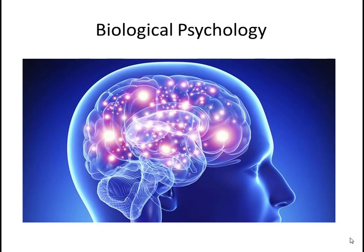Before we get into specific topics like addiction, sleep, hunger, or brain damage, we should go over some basics — some basic overviews of anatomy and of the field of biological psychology. Biological psychology, sometimes called biopsychology, looks at biological functions and how they relate to certain mental processes and behaviors, and how behaviors and mental processes affect the biology. That's everything from genetics to the nervous system to how neurons work and neurotransmitters.